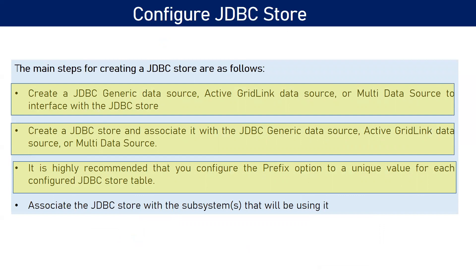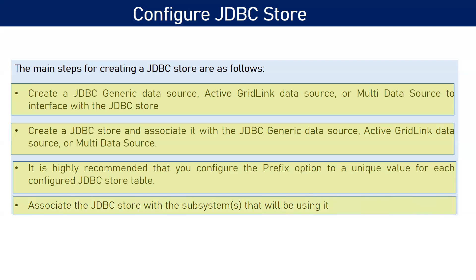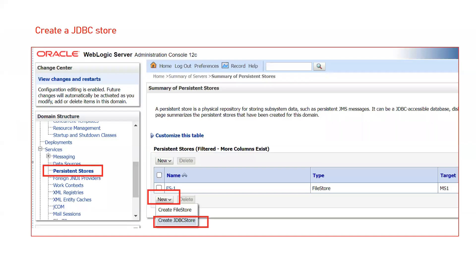The table created by WebLogic is named 'WL_STORE' by default. It is recommended to give a custom prefix to your tables. If you have multiple applications with different JMS configurations deployed in your domain, each may need a different messaging table. To differentiate between them, you can give a prefix so the table is created as, for example, 'dev_WL_STORE', 'prod_WL_STORE', or 'test_WL_STORE'. After that, associate the JDBC store with your subsystem — in this case, your JMS server.